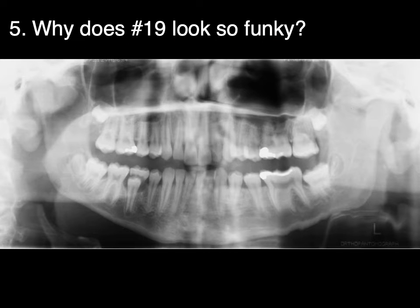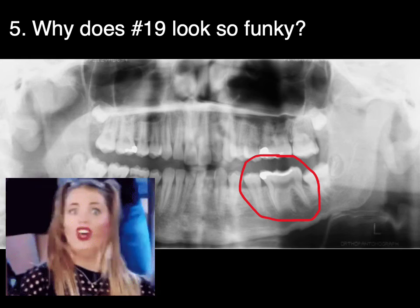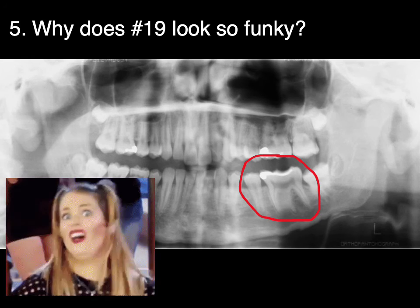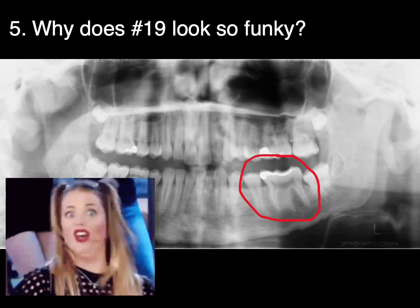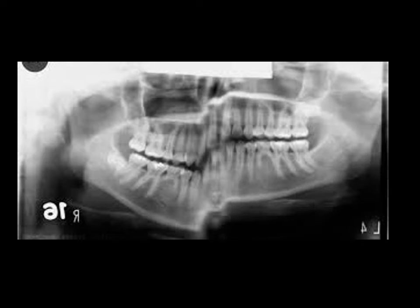So why does tooth number 19 look so funky? Number 19 is right here. Is it really shaped like this? No — the patient was moving. The patient moved such that there's a little divot on the inferior border of the mandible as part of this movement. They didn't move up and down so much; they really moved so that when the image of the first molar was being taken, it was being taken for longer because they moved a little bit. And here's another one — kind of crazy. This was more of an up-and-down movement, because all of a sudden the pan's going just fine and then it takes a big dip because the patient moved in a superior-inferior direction.